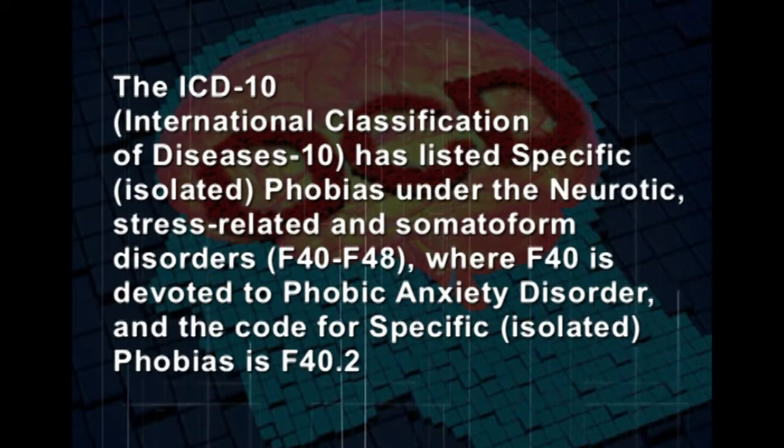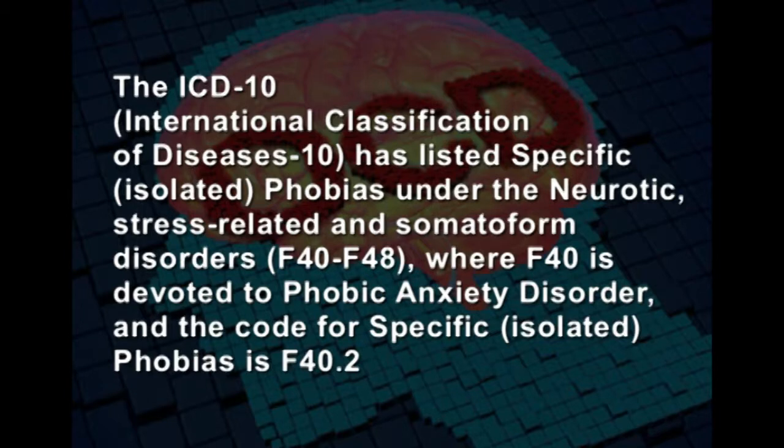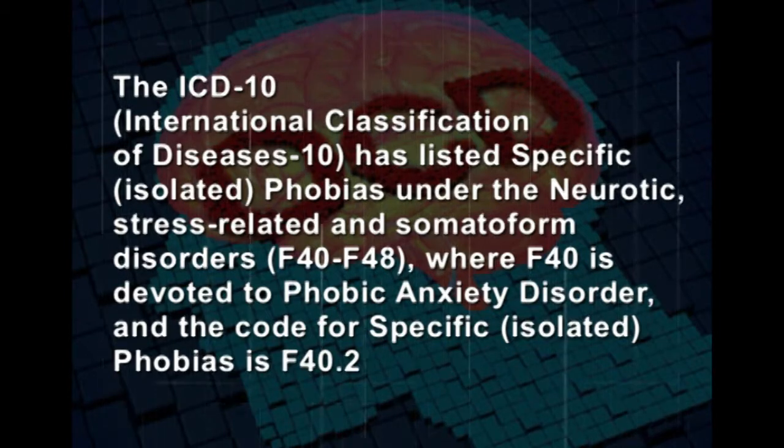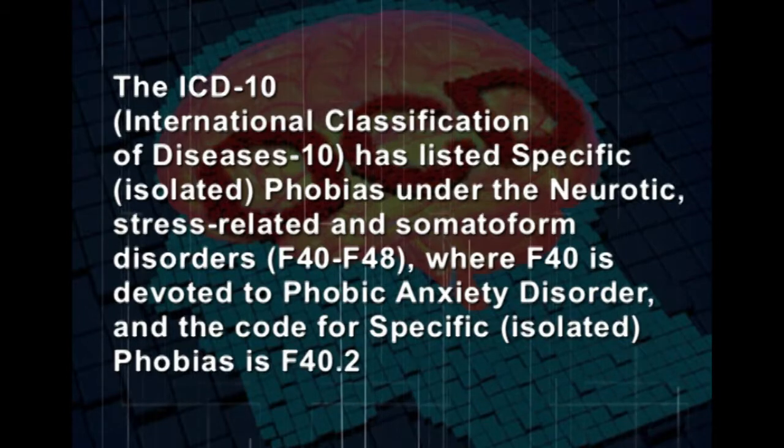The DSM-5 has listed specific phobia under anxiety disorders, and the diagnosis needs to be specified if it involves phobia towards animals, natural environment, blood injection injury, situational, or others. The ICD-10 has listed specific isolated phobias under neurotic, stress-related and somatoform disorders with coding F40 to F48, where F40 is phobic anxiety disorder and the code for specific isolated phobia is F40.2. I would like to direct your attention to the screen to view the diagnostic criteria for specific phobia.